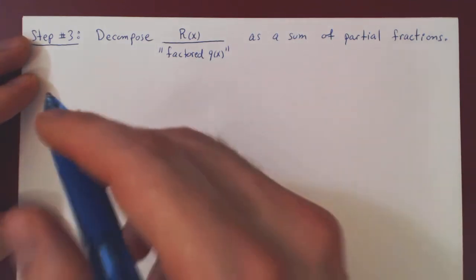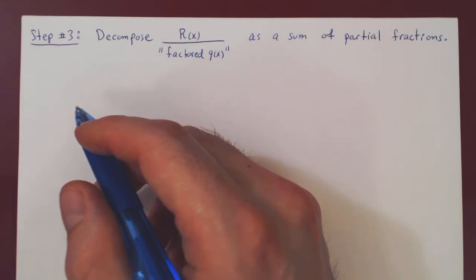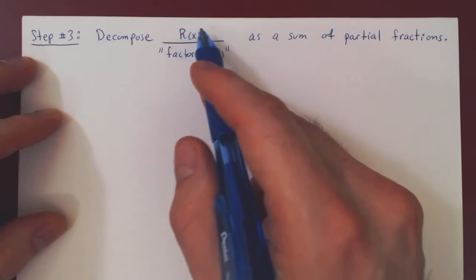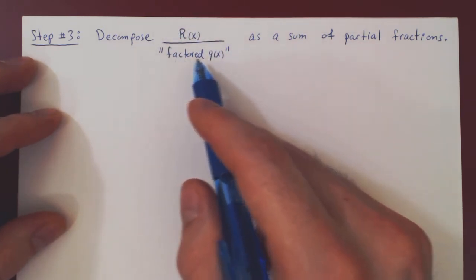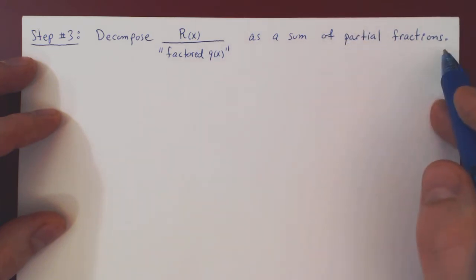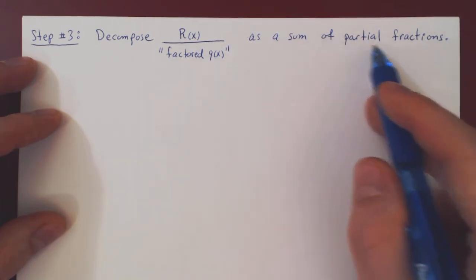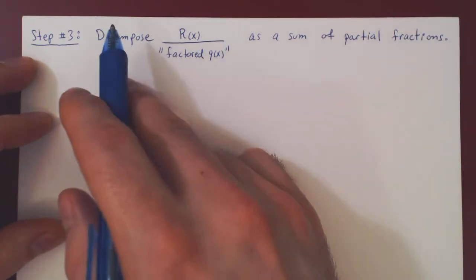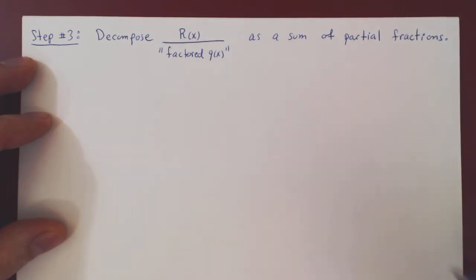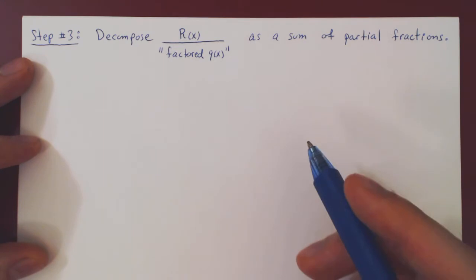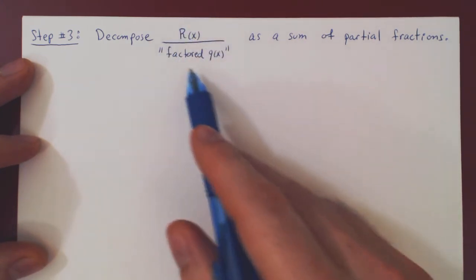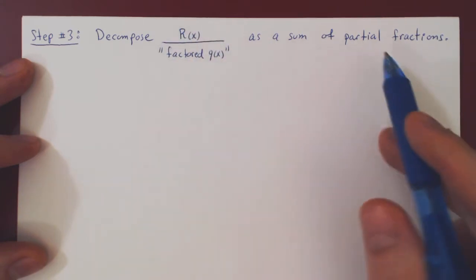In our previous video, we looked at three steps in integrating rational functions. In step three, we said that we want to decompose the remainder from the long division over the factored form of our divisor as a sum of partial fractions, which is a sum of simpler rational functions. The best way to understand how this works — how to obtain such a decomposition — is through a few examples. So let us consider three examples that will illustrate the two key ingredients in decomposing such an expression as a sum of partial fractions.